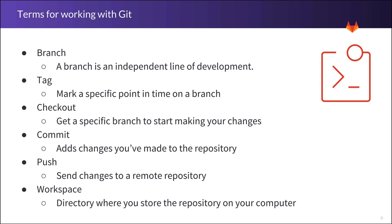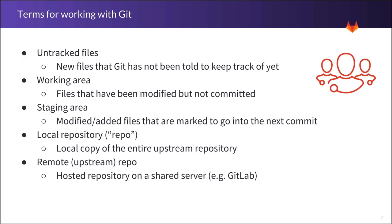To send them to a remote repository, you'll push those commits upstream. We'll learn more about this coming up. The workspace is a directory on your computer where you've chosen to store the repository and the code that goes along with it. Untracked files are any new files in that workspace that you have not yet added to Git to tell Git to track the changes on those files.